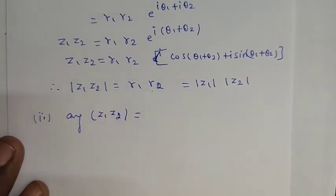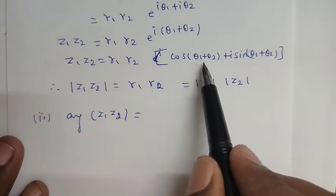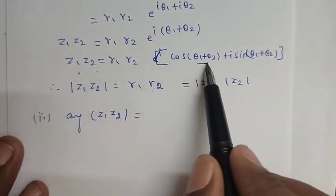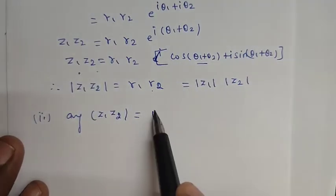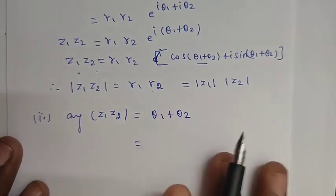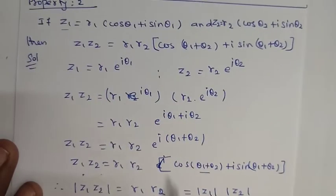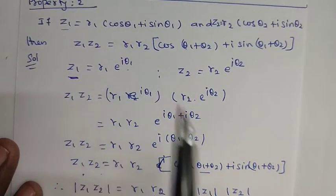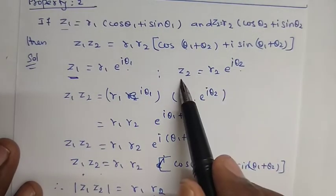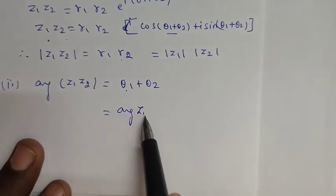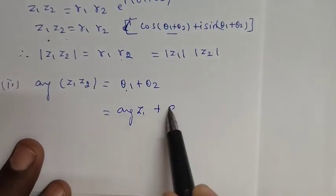The argument of z1 z2 equals θ1 plus θ2, which is the argument of z1 plus the argument of z2.